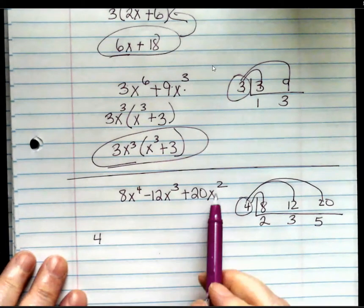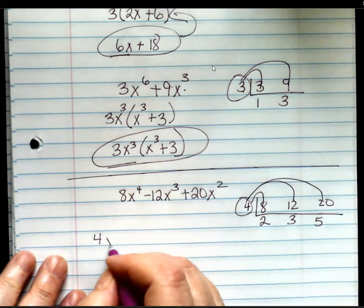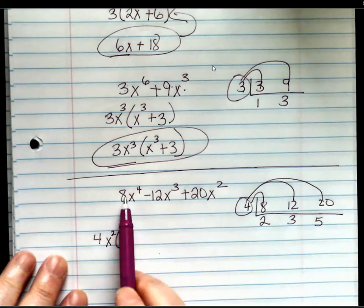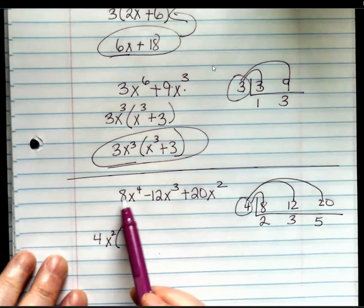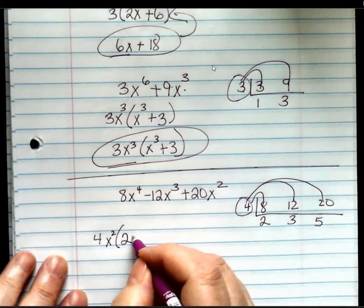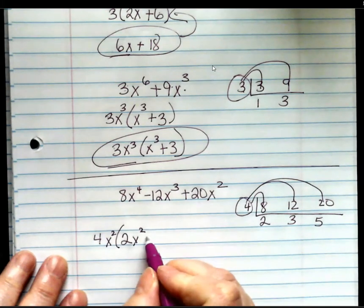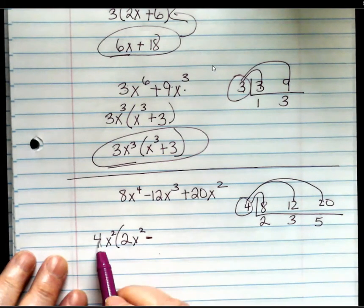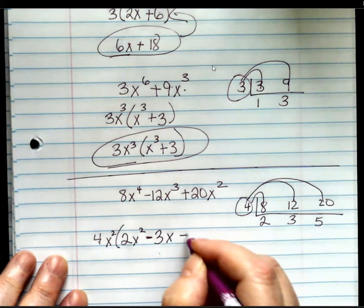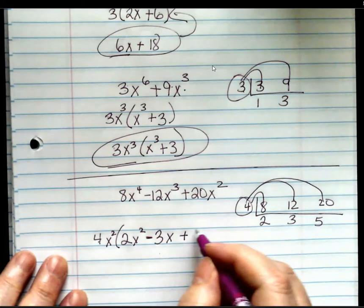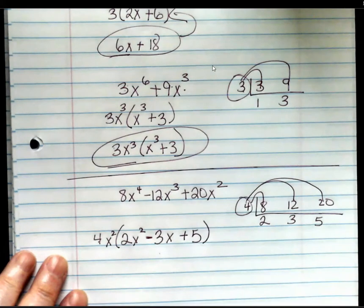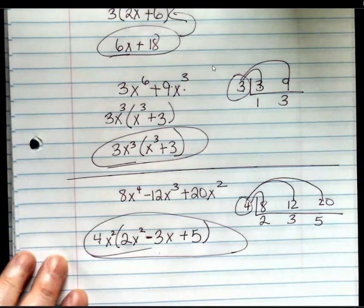What's my smallest variable? x squared. So, that's what's on the outside. And I'm basically just dividing everything out. What's 8 divided by 4? 2. 4 subtract 2 is 2. What's 12 divided by 4? 3. 3 minus 2 is 1. What's 20 divided by 4? 5. The x squared equals 1. So, I don't need to put it. And that's how you factor out a number.